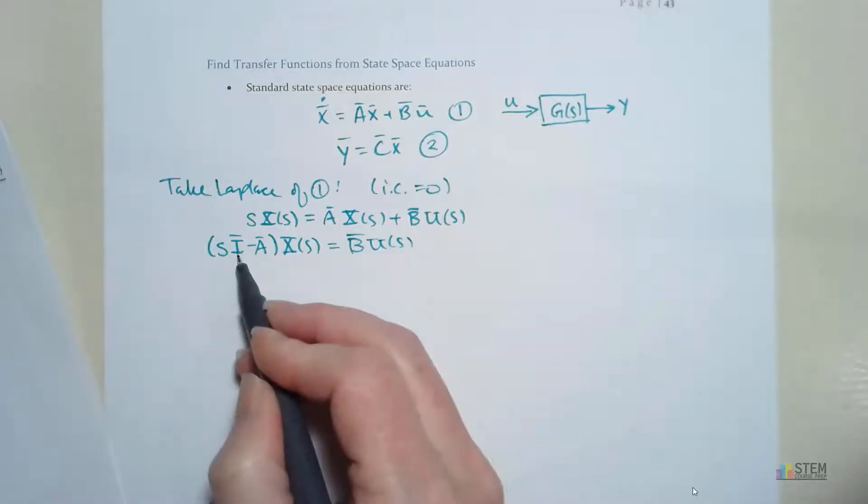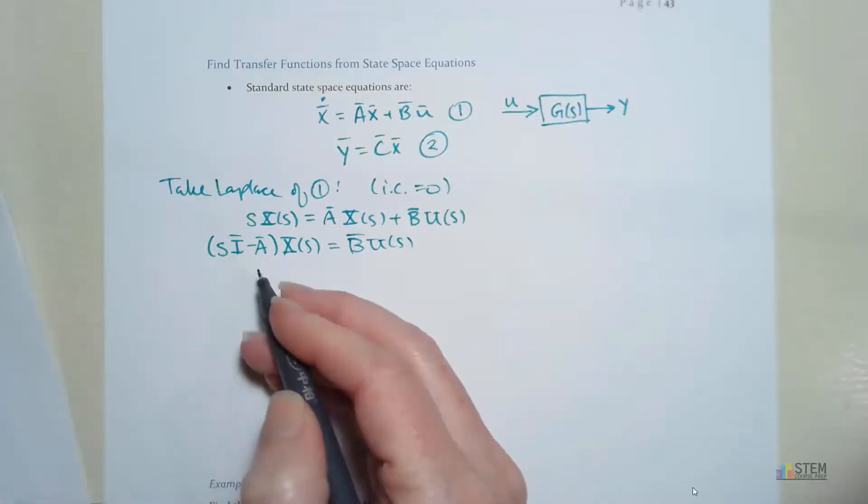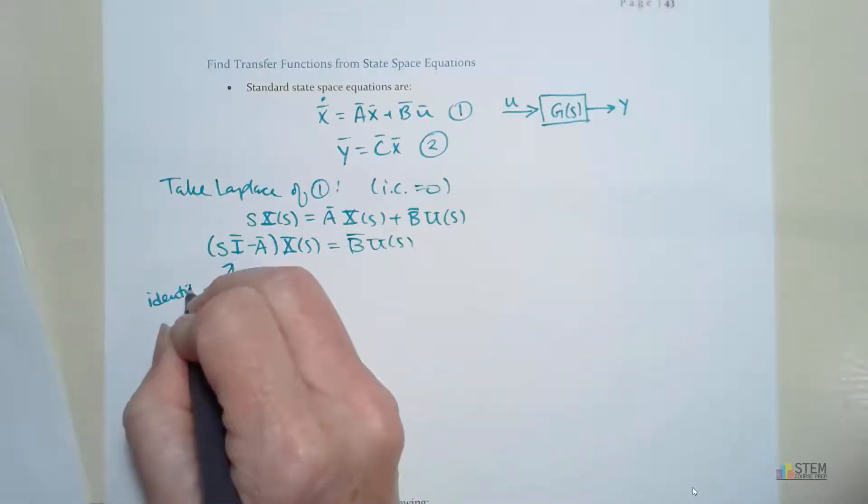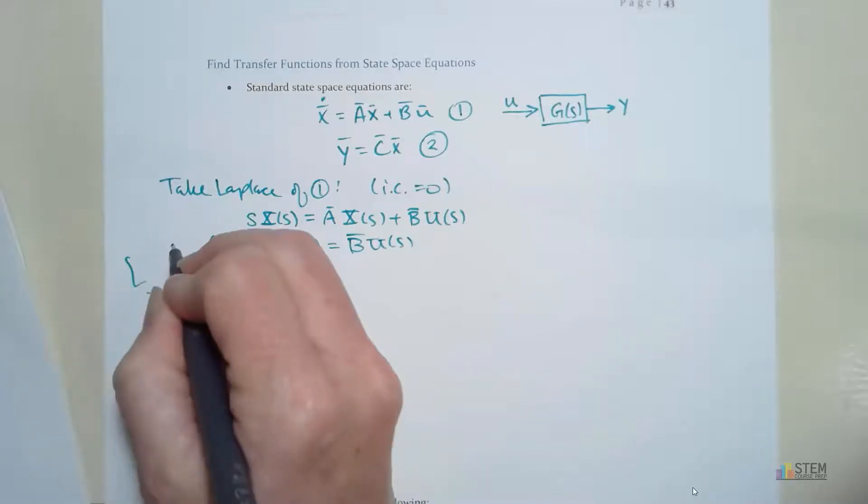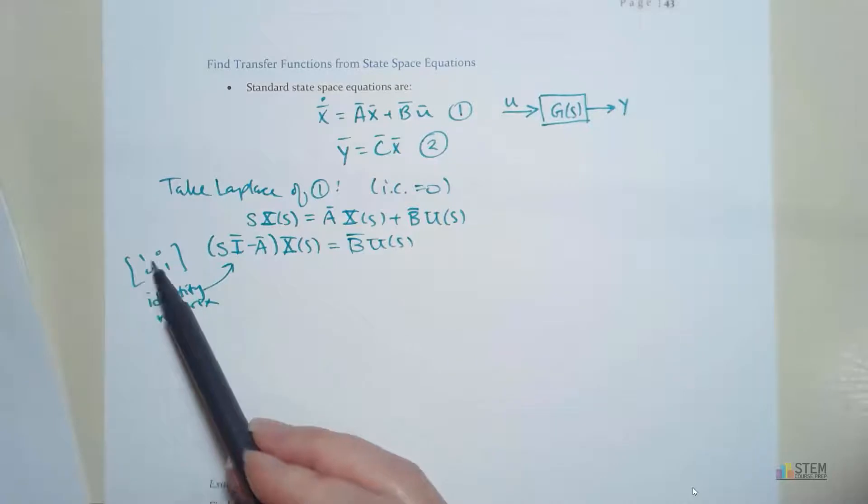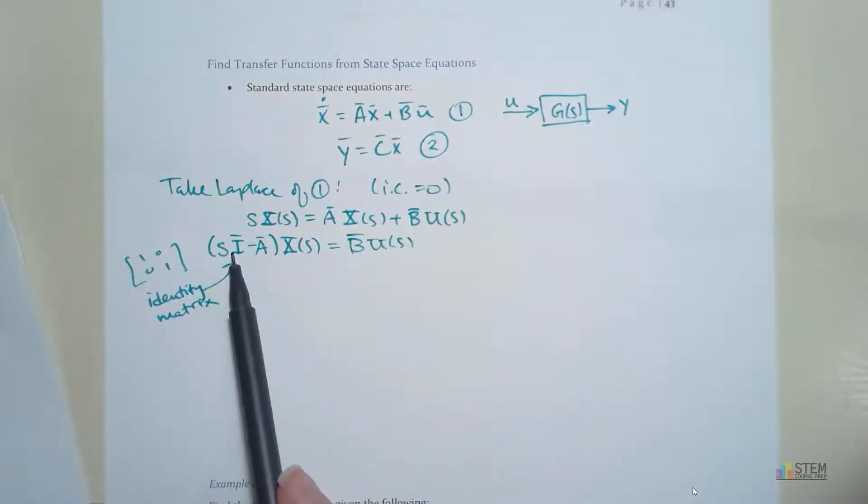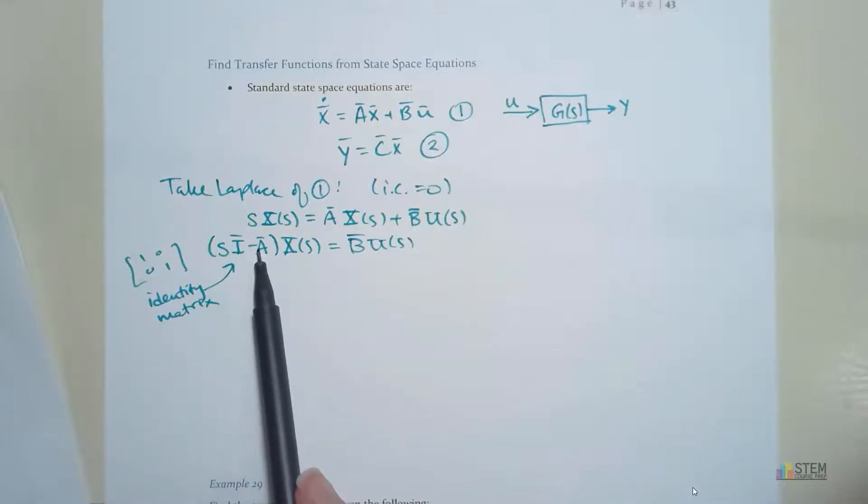Now you might be wondering what I is. I is the identity matrix. So if you remember back from linear algebra, if you have a 2 by 2, you're just going to have this diagonal of 1's here. 0's everywhere else. That's what the identity matrix is.